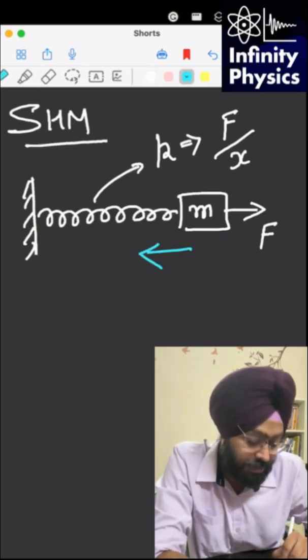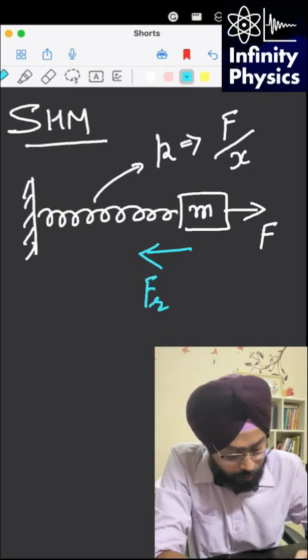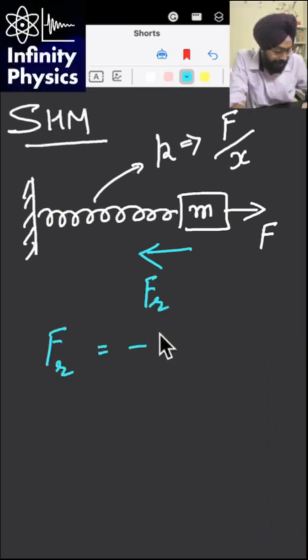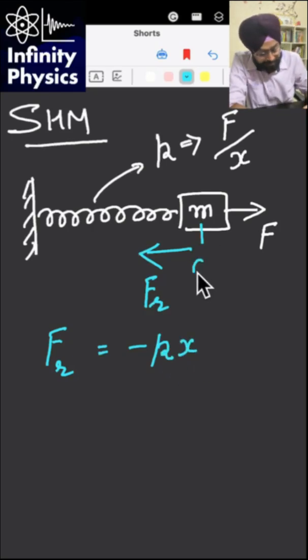This restoring force, according to Hooke's law, is equal to negative of spring constant multiplied by the displacement x. Now what is x? This is the mean position of the mass.